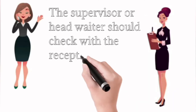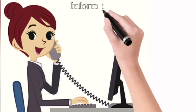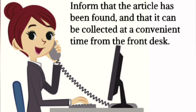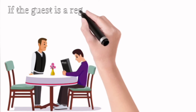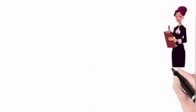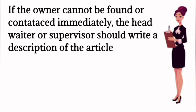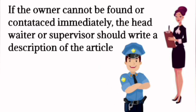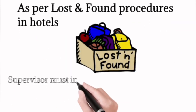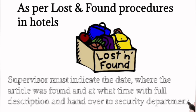The supervisor or head waiter should check with reception if the guest has left the premises. If the guest is a resident, the receptionist may ring their room to inform them the article has been found and can be collected from the front desk at a convenient time. If the guest is a regular visitor, the head waiter can contact and inform them about the article left behind. If the owner cannot be found or contacted immediately, the head waiter or supervisor should write a description of the article and its contents — in the case of a wallet or purse — in the presence of a security person and the person who found the article, as per lost and found procedures.